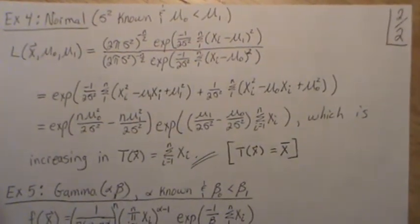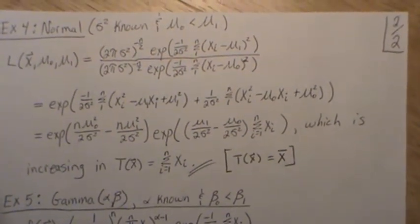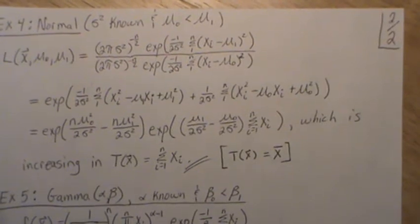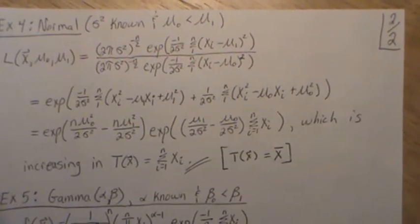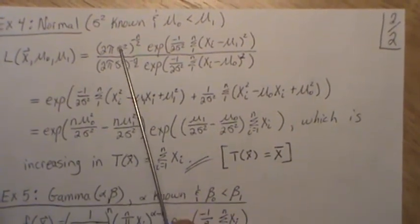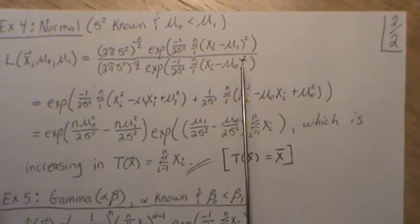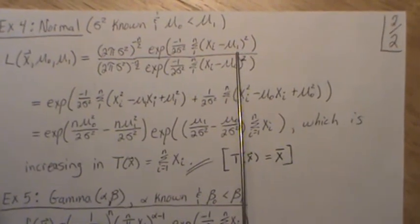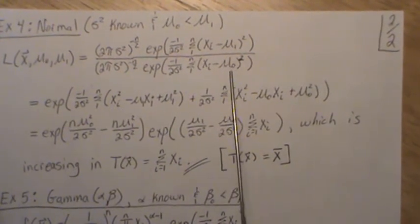So example four, the normal case. This time we'll assume we know σ² and let μ₁ be greater than μ₀. Here's the likelihood ratio. Now remember this is the joint density with μ₁ plugged in, and here's the joint density with μ₀.